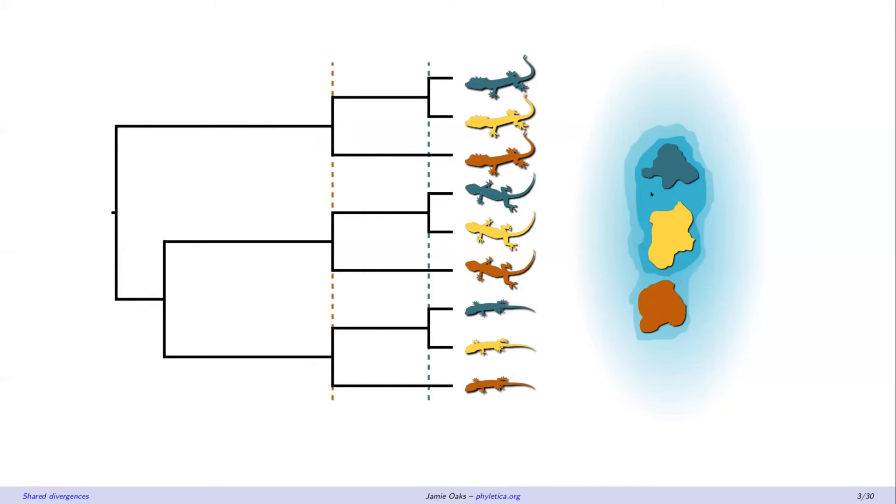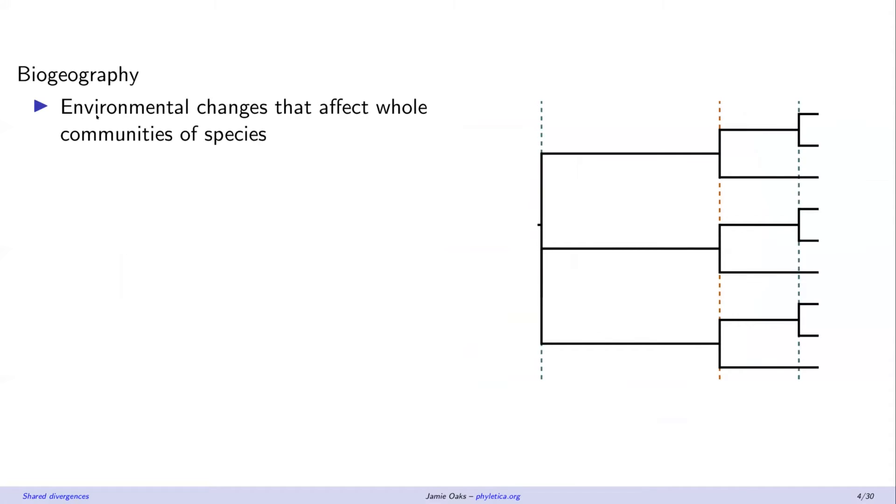You can also imagine that if all three islands fragmented at the same time, we might expect to see multiplications in the tree. That's an example from biogeography, but if we're interested in the evolutionary history of gene families, any duplication where a region of a chromosome that has multiple members of that gene family gets duplicated will cause shared divergences across the phylogenetic history.